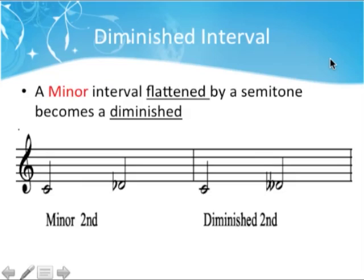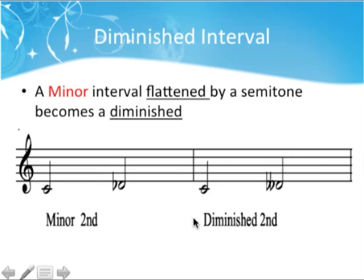Let's start with a diminished interval. When a minor interval is flattened by a semitone it becomes diminished. We've got C to D-flat which is a minor second because it only has one semitone difference. When we write C to D double-flat it becomes a diminished second. Written and orally are slightly different — remember the rules.